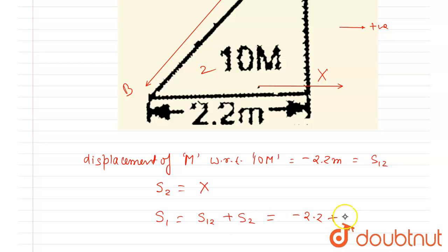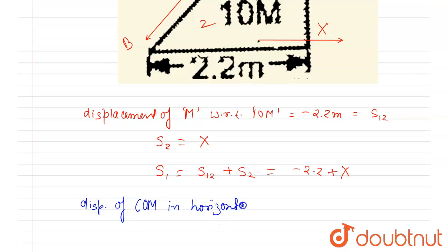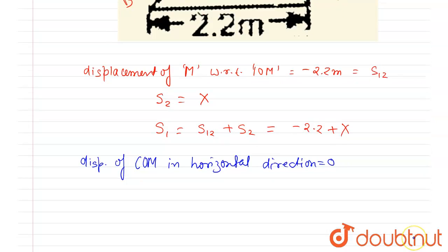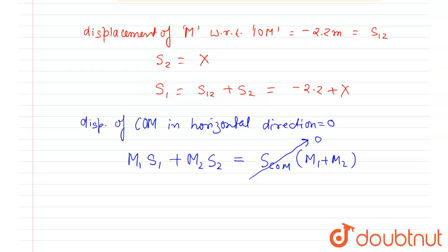So the displacement of the smaller block with respect to ground will be minus 2.2 plus x. Now, since there is no net force in the horizontal direction, the displacement of the center of mass in the horizontal direction will be zero.